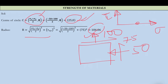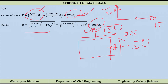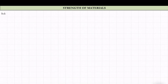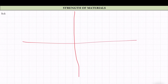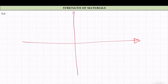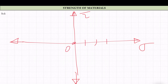Now let us see how we will plot this circle. A graph paper is required for Mohr's circle. On the graph, sigma is on the horizontal axis and tau is on the vertical axis. This is the origin, and here we can mark the values of stresses.